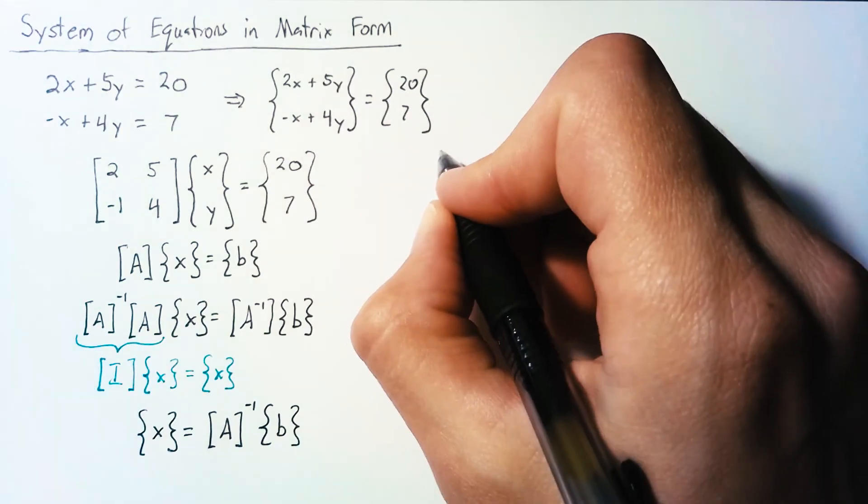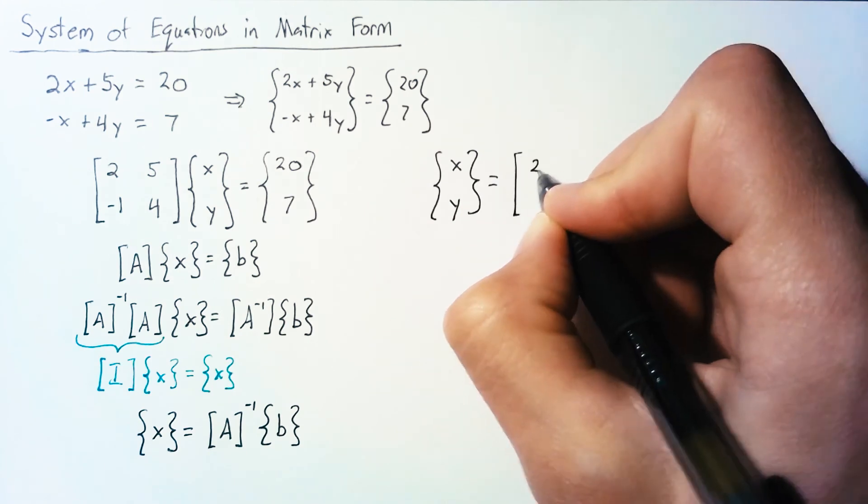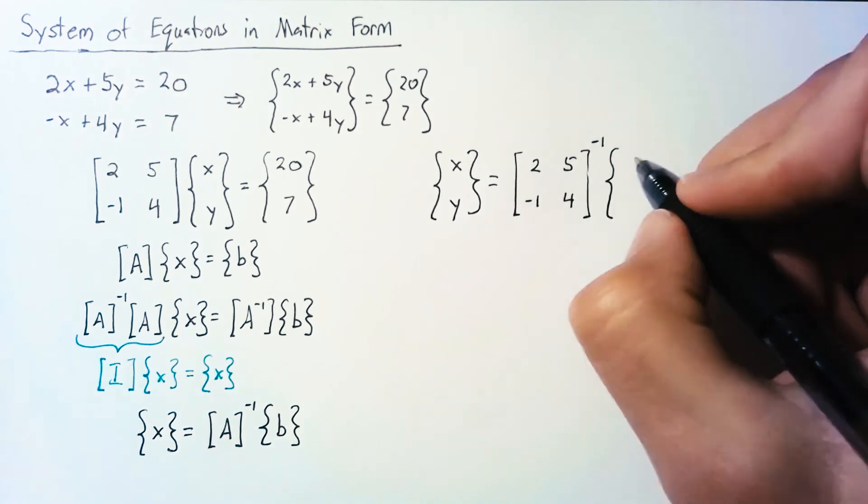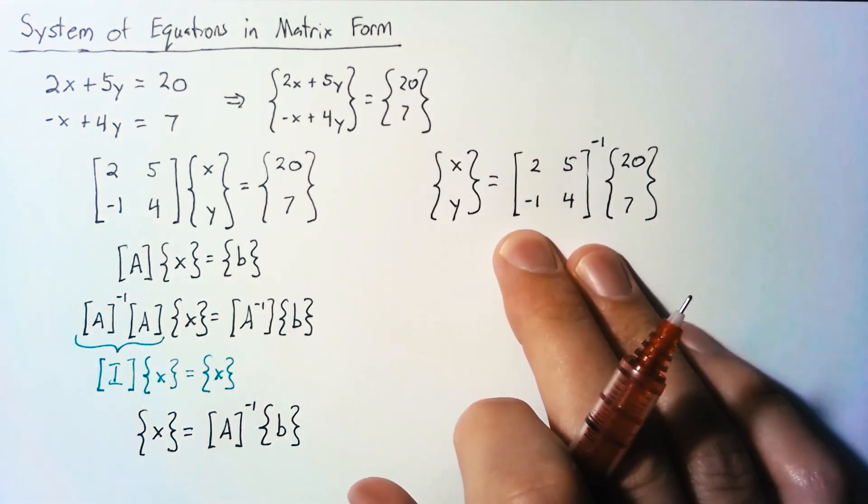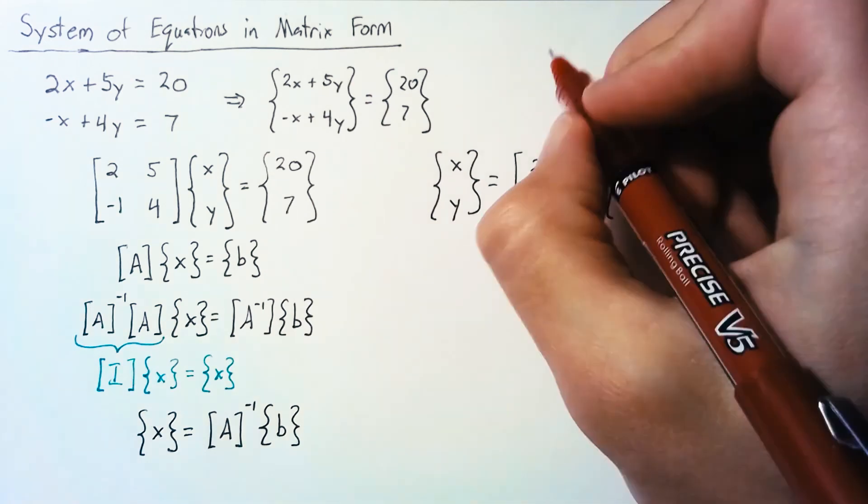Well, it says that x and y are going to be equal to the inverse of our A matrix multiplied by our B matrix. So as I said in the previous video, we have a way of calculating this directly by hand.